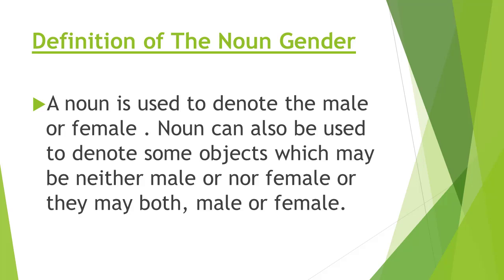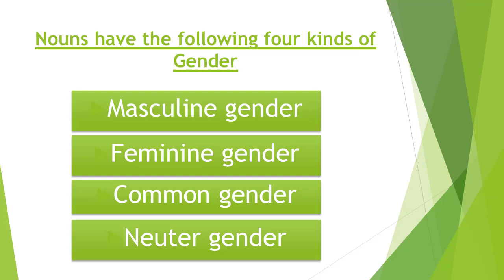So let's see what kinds of gender there are, including some non-living things that come under gender. There are four kinds of gender. First is masculine gender. Second is feminine gender. Third is common gender. Fourth is neuter gender. It is not necessary that they will be in this sequence — you can change their sequence.